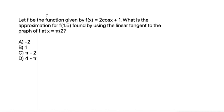This problem says let f be the function given by f of x is equal to 2 cosine of x plus 1. What is the approximation for f of 1.5 found by using the linear tangent to the graph of f at x is equal to pi over 2?